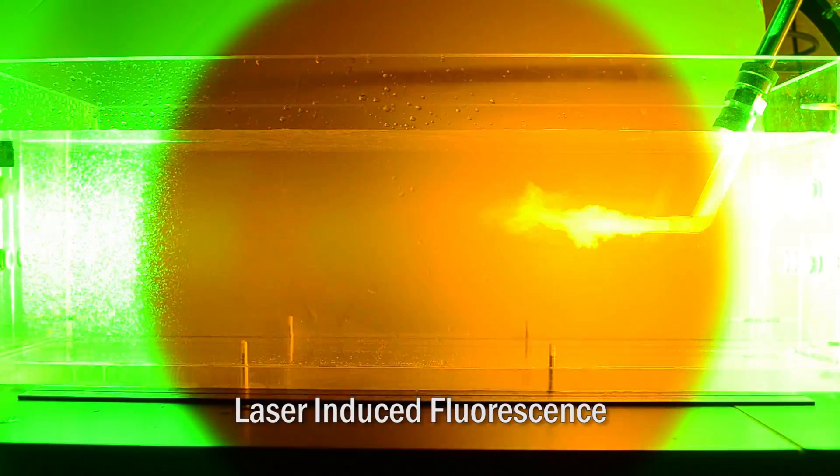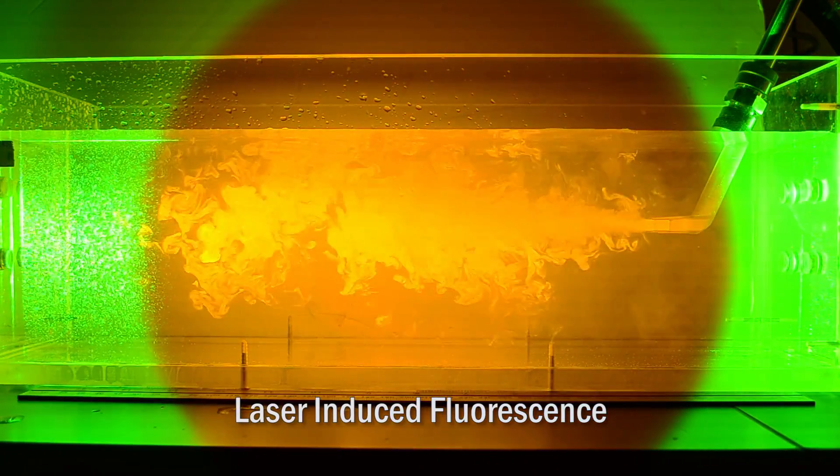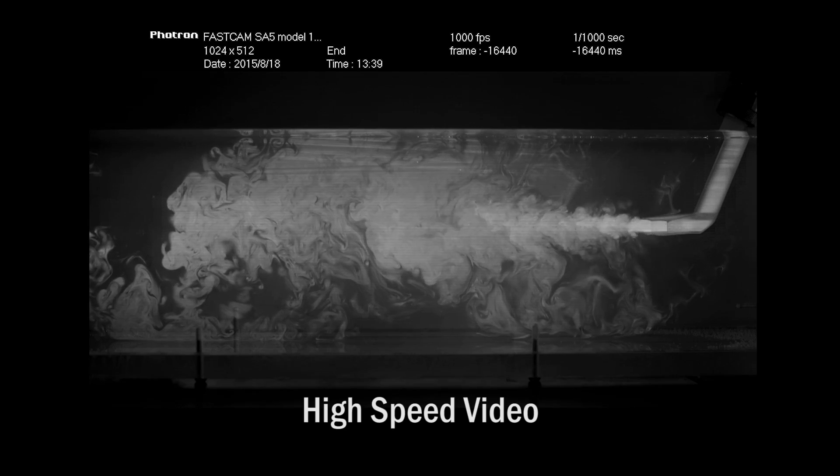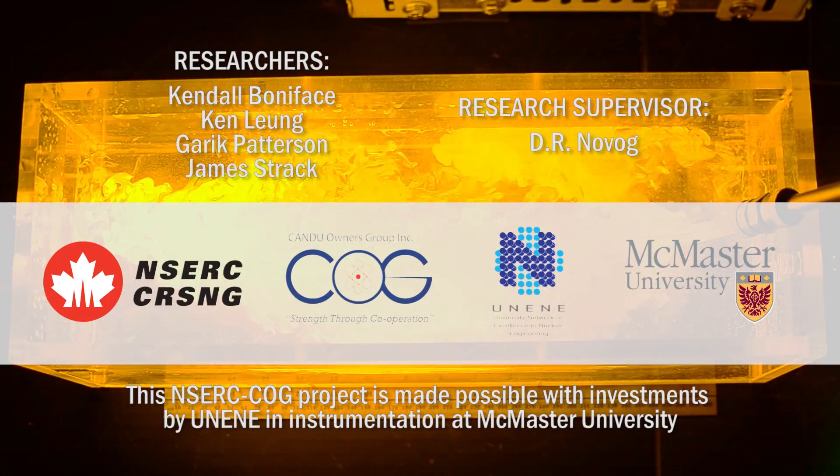Using fluorescent tracer dyes, flow and temperature patterns can be observed as they develop. These results can be used to improve computer models used in nuclear safety analysis.